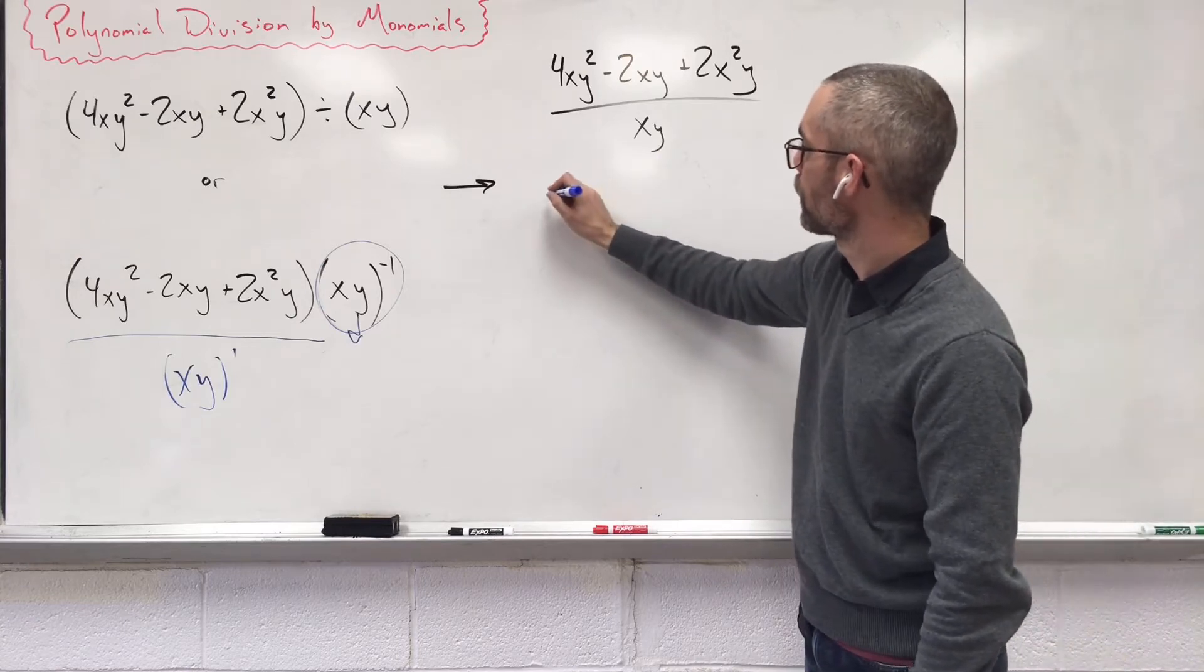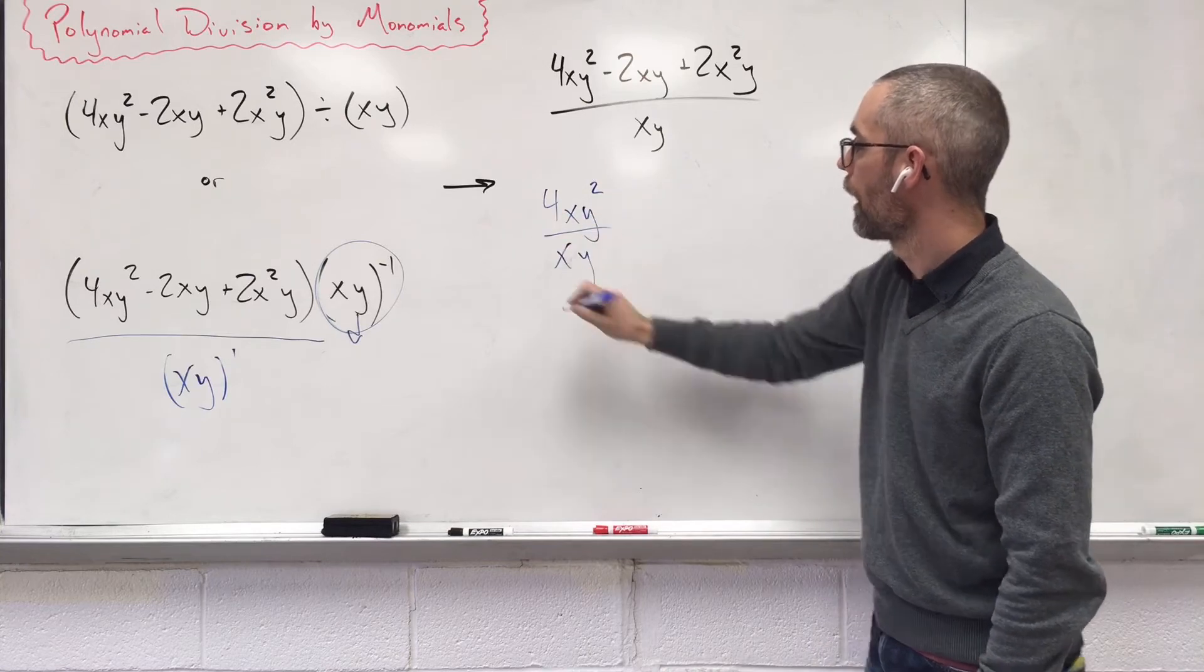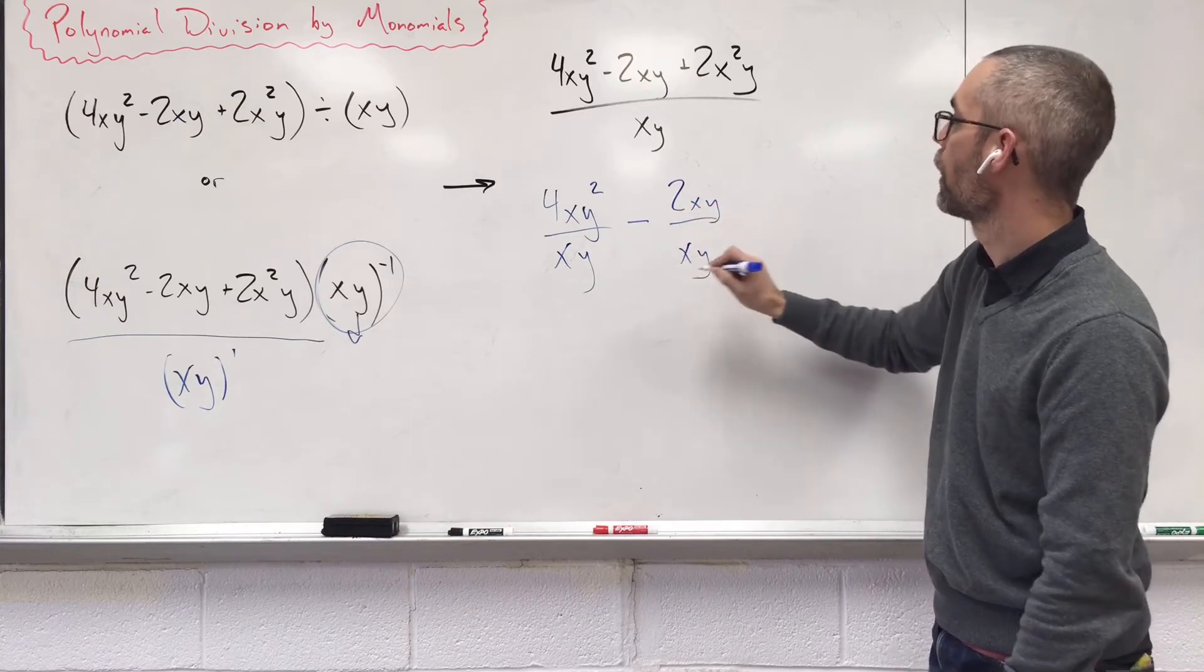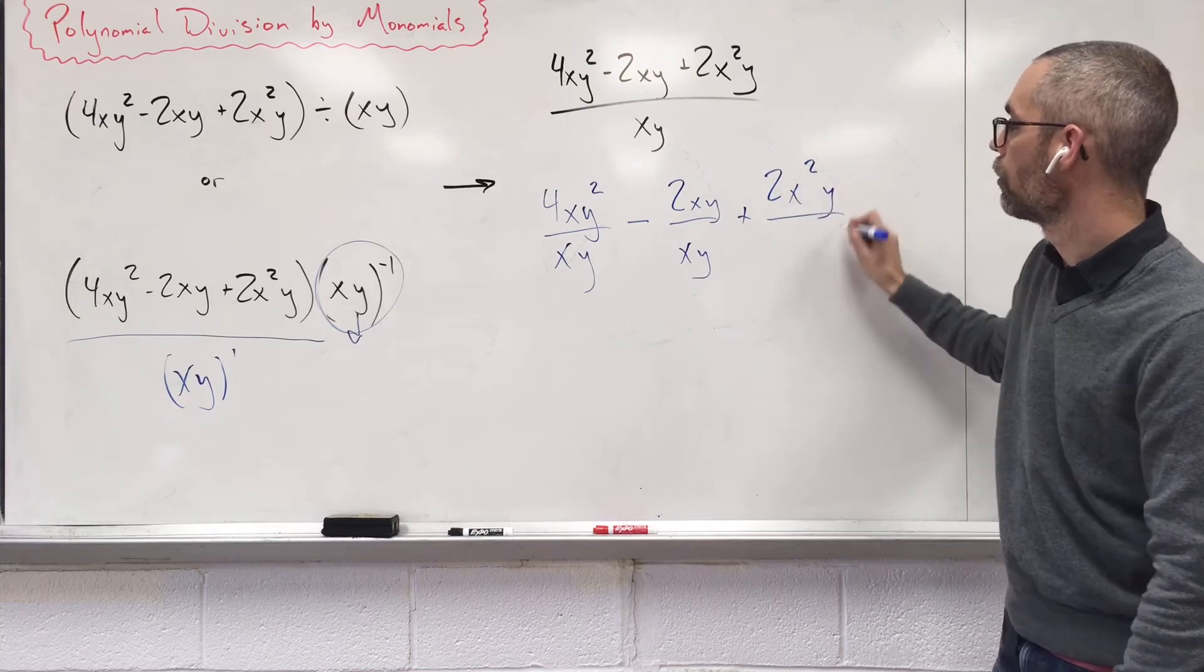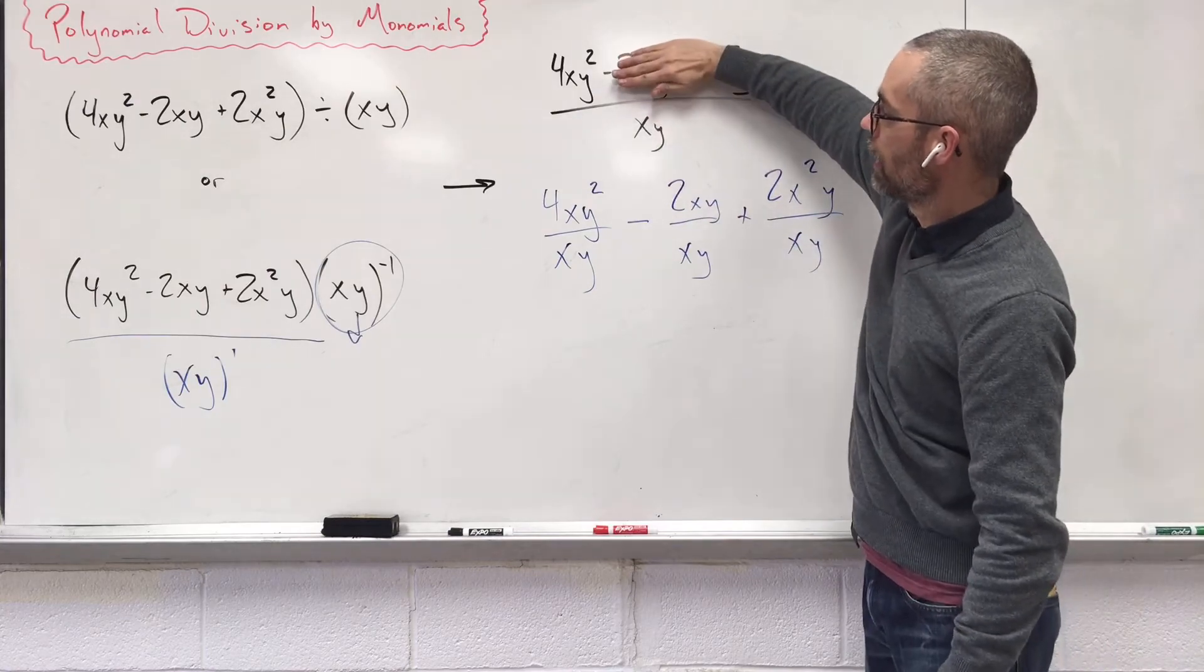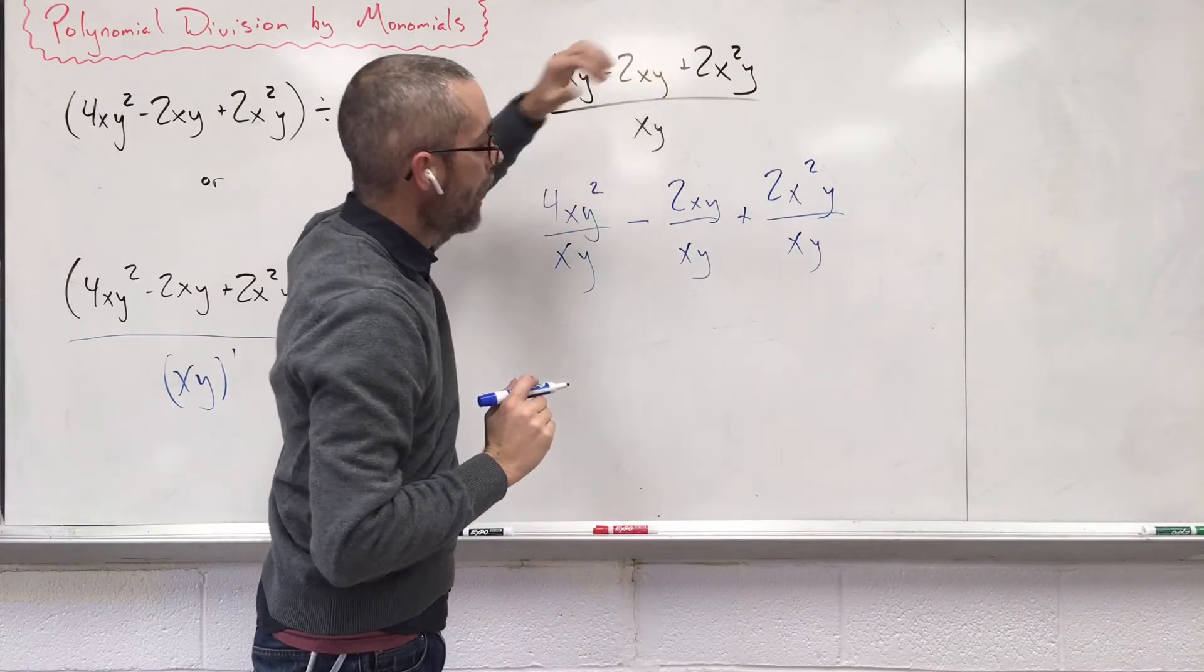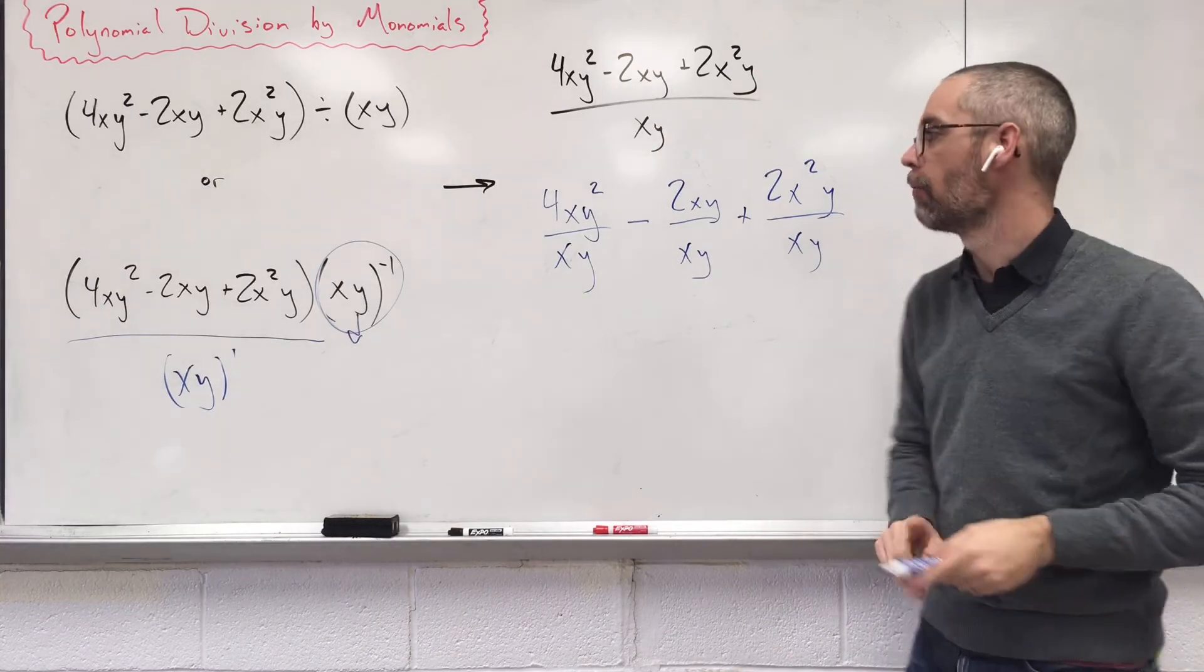The three fractions I'm going to create are: 4xy² over xy minus 2xy over xy plus 2x²y over xy. So I took this xy and I created a fraction there, I created a fraction there, and then I created a fraction there. And now we're going to look at each individual piece as if it's like three separate problems.